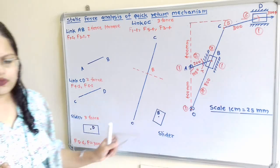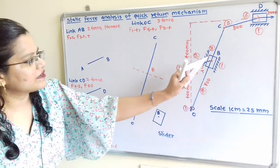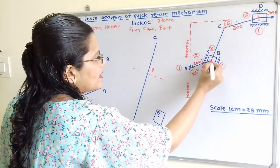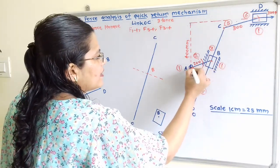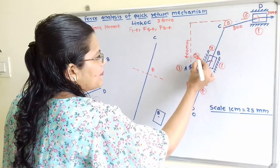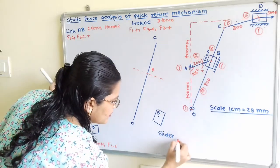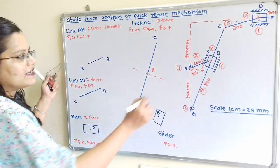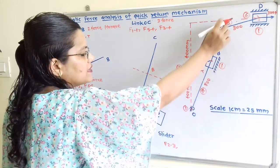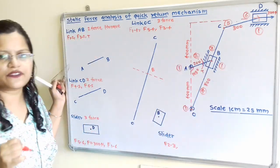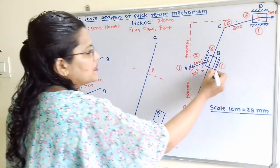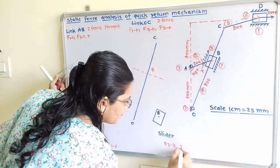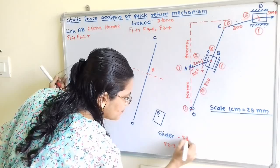For slider at point B, which is link number 3: it is connected to link AB, so force F of 2 to 3 is applied. It moves along link OC, and the surface is link 4 (not fixed surface), so force F of 4 to 3 is applied. This slider is a two-force member.